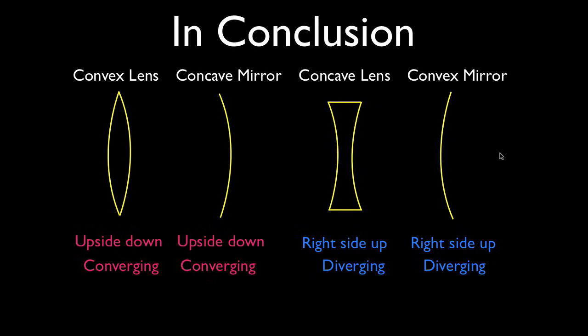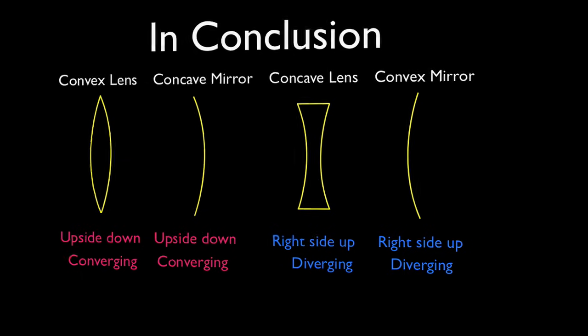The object appears to come from behind the mirror, and in the case of the concave lens, the image is formed back on the other side as your eye and brain trace those light rays backwards. I hope you found that helpful. You can leave me a thumbs up or a comment below. Thank you very much for watching, and we'll see you next time.